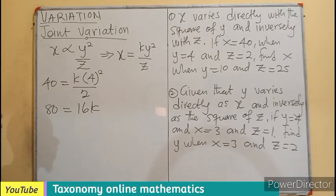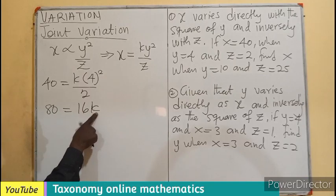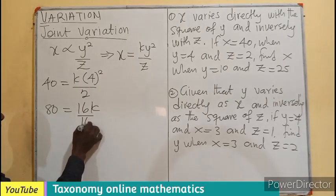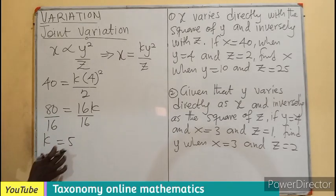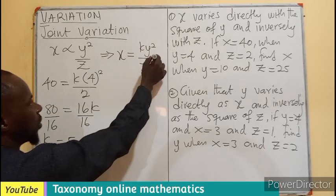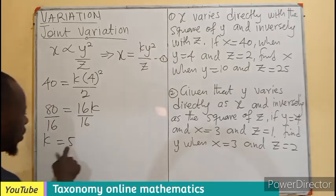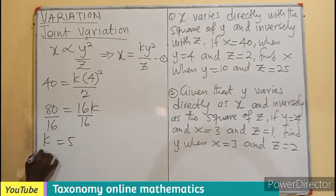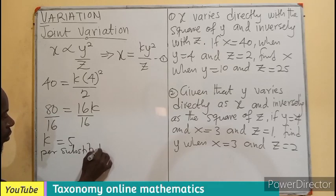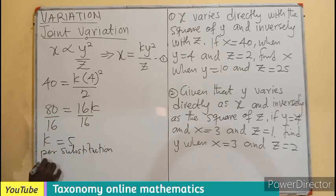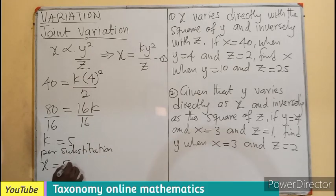Now we are looking for the values of K, so we divide by 16. K is going to be 5. So if 5 is K, we can substitute. Let's label this equation 1. Per substitution, our X is now going to be K, which is now 5, times Y squared over Z. This becomes the second equation.